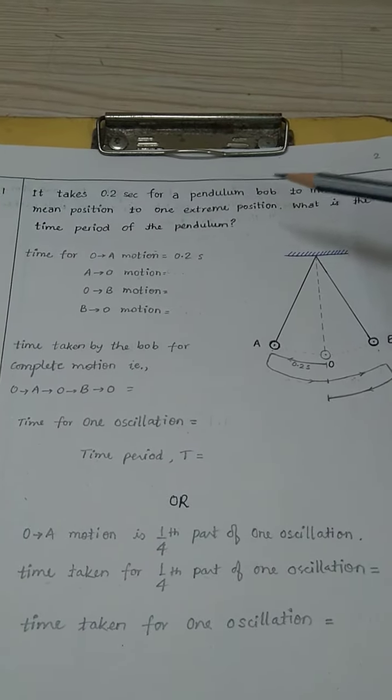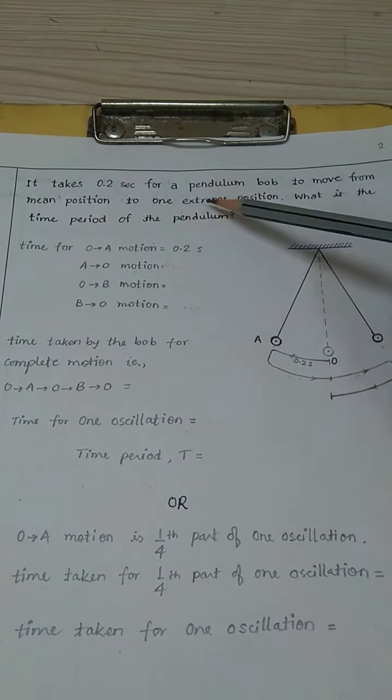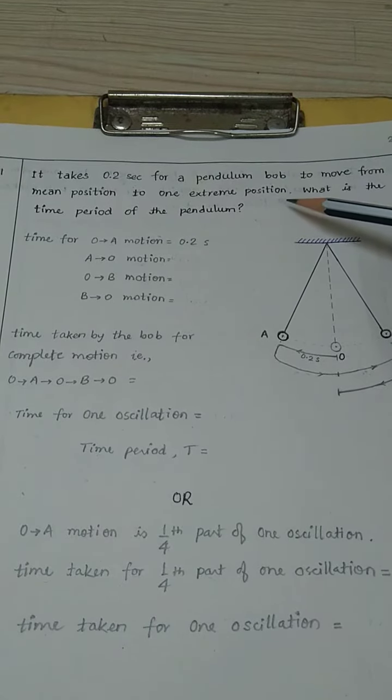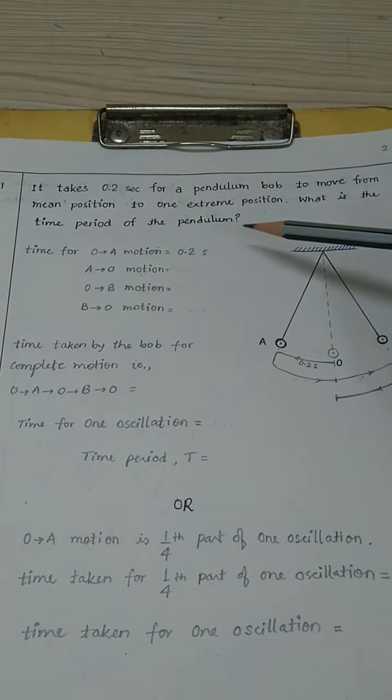Now come to the question. It takes 0.2 seconds for a pendulum bob to move from mean position to one extreme position. What is the time period of the pendulum?